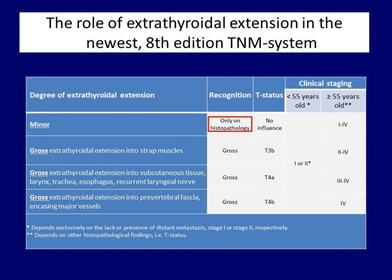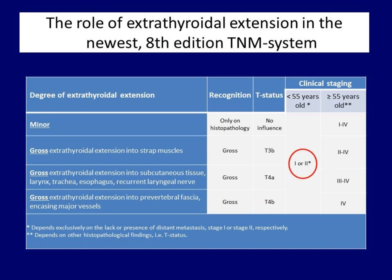This is very important: minimal extrathyroidal spread is what ultrasound is best for. Essentially, ultrasound is most suitable for detecting findings whose clinical and prognostic significance has ceased to exist. Looking at the third column, minimal extension has no role in the TNM status, while depending on the extent of gross spread, the tumor belongs either to T3 or T4 category. Another important change in the new system is that the age limit has been elevated from 45 to 55 years.